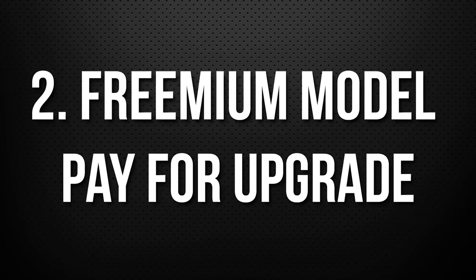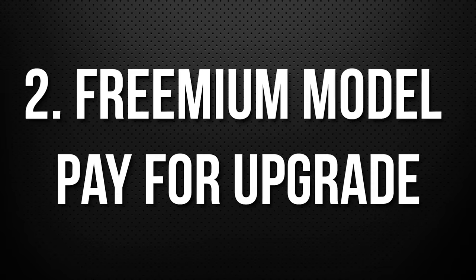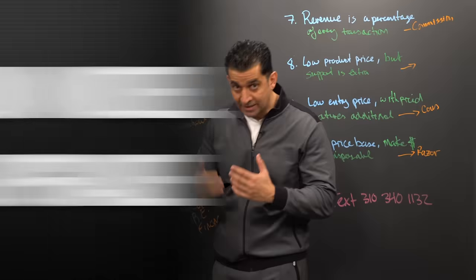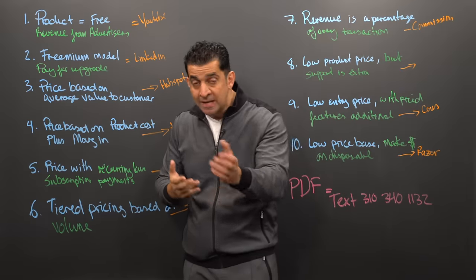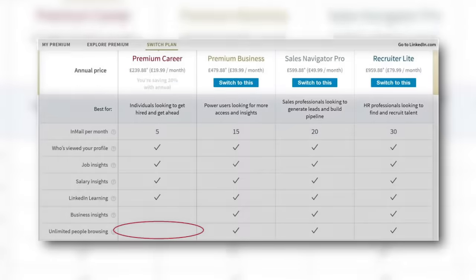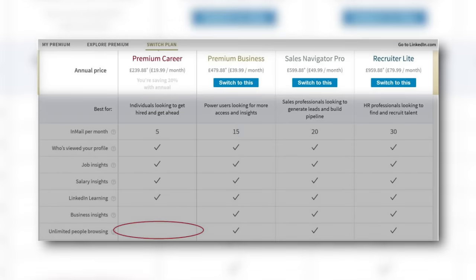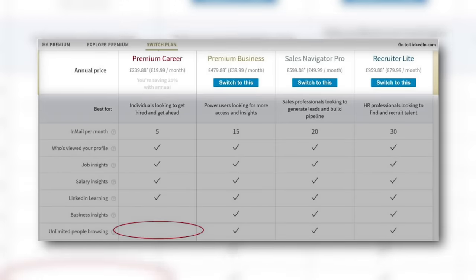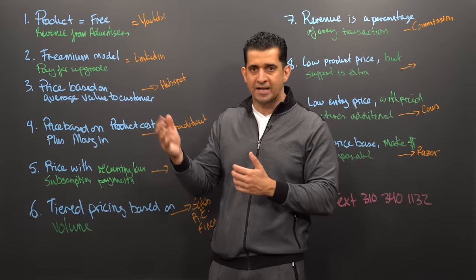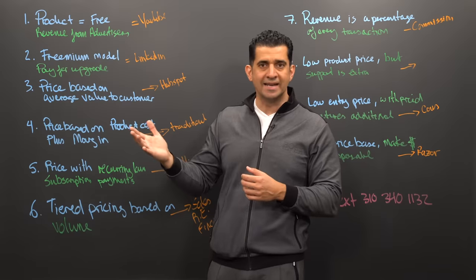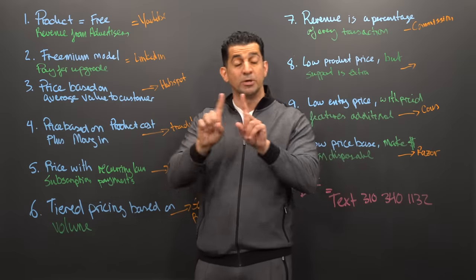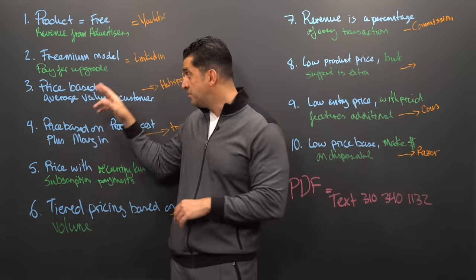The second model is the freemium model with the pay-for-upgrade option. LinkedIn is free, but if you want to upgrade, you've got to subscribe at a certain cost — $24.95, $49.99, $99.95 — but you start out as a freemium.